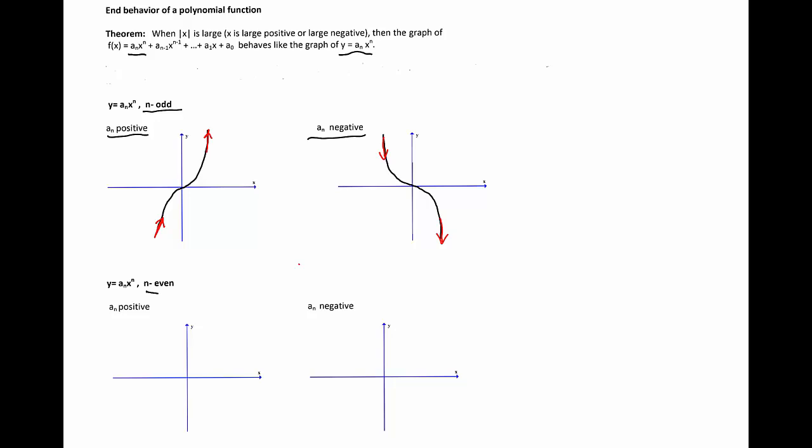When n is even and a_n is positive, the graph looks like a square function, so we'll start the graph going down and we'll have to end the graph of the polynomial function f(x) going up.